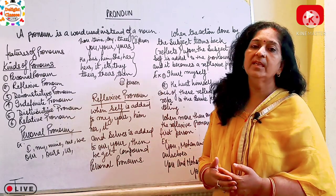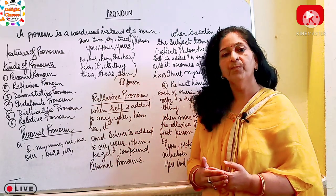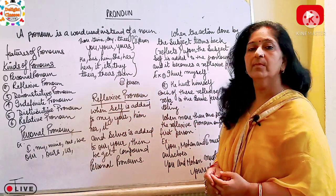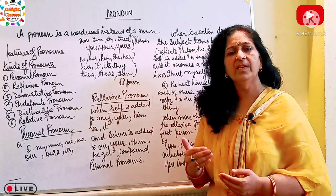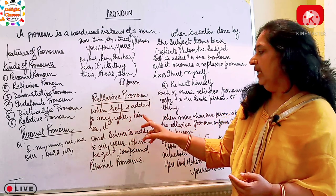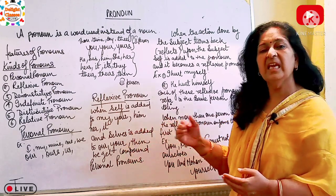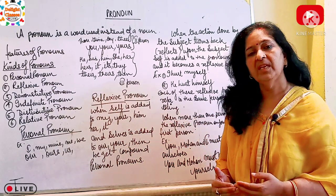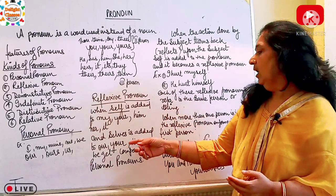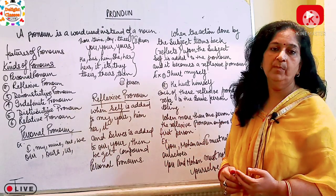What are reflexive pronouns? When 'self' is added to my, your, him, her, it — and 'selves' (S-E-L-V-E-S) when 'self' is added to our, your — we get compound personal pronouns.